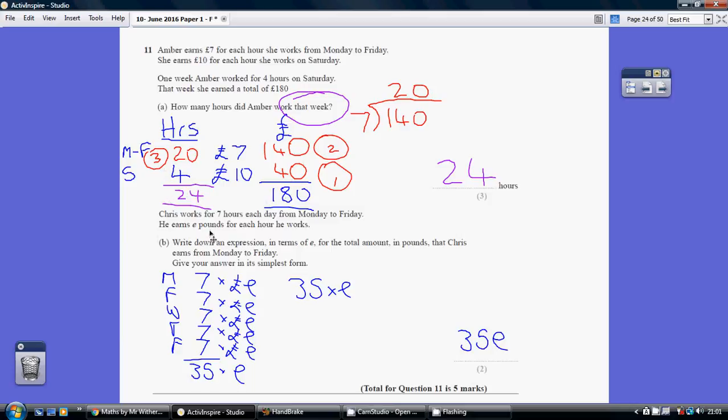Now part B, this again is quite complicated I think really. Chris works for seven hours each day from Monday to Friday. So seven on a Monday, seven on a Tuesday. I don't know if I put an F there, sorry that should be a T. Seven on the Tuesday, seven on the Wednesday, seven on Thursday, seven on the Friday. Add that up, you've got 35 hours.